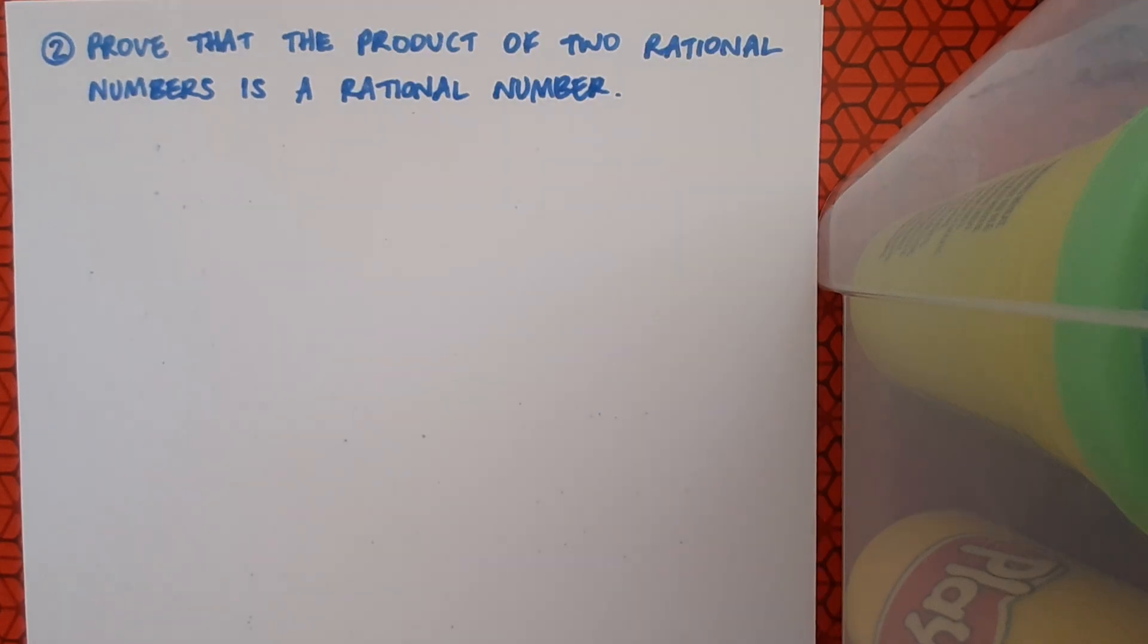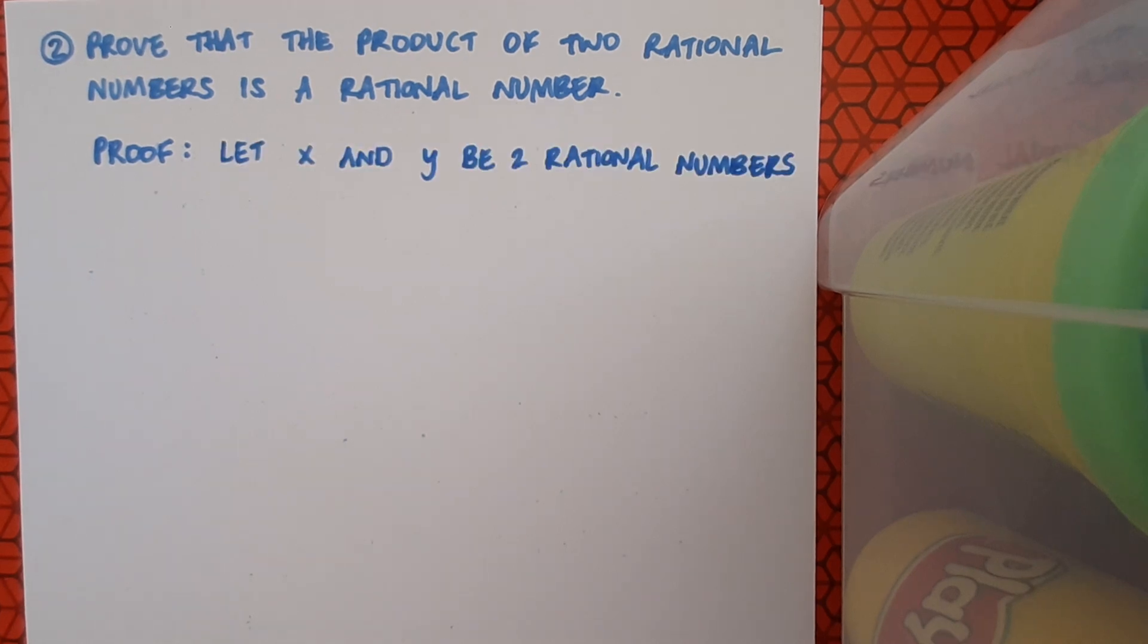So I'll do one more direct proof example, and this time it's prove that the product of two rational numbers is a rational number. So again, just like before, I'm going to start off by defining what I'm talking about, what names I'm going to give to these numbers and how I can define them. So I'll start off by calling the two numbers x and y, and I'm going to say that x and y are two rational numbers.